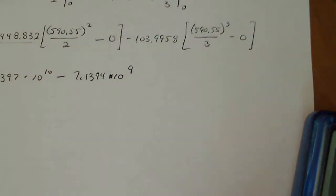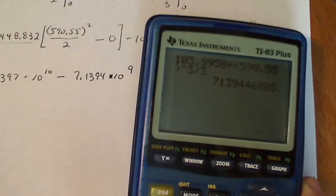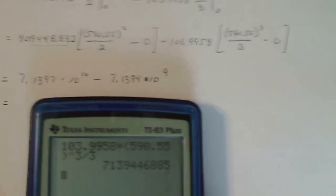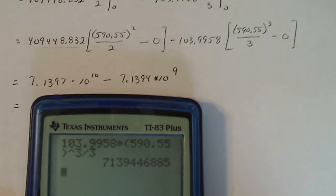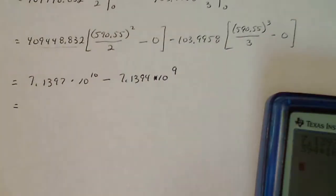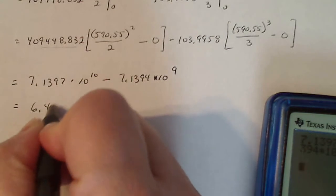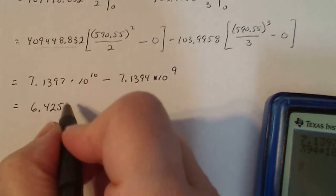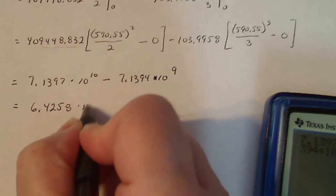And I just have to subtract those two. So, hey, my little dog's down there whining. 7.1397 times 10 to the 10th minus 7.1394 times 10 to the 9th. We get 6.4257, 6.4258 actually, times 10 to the 10th.